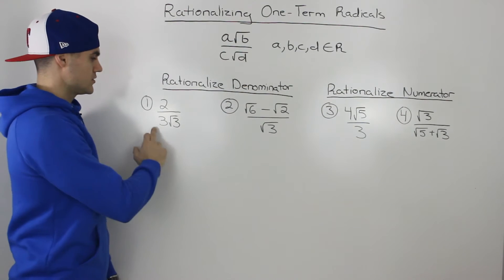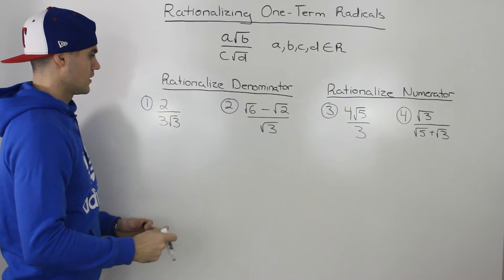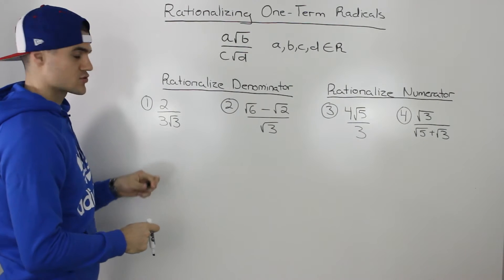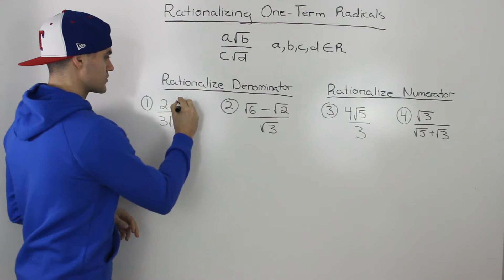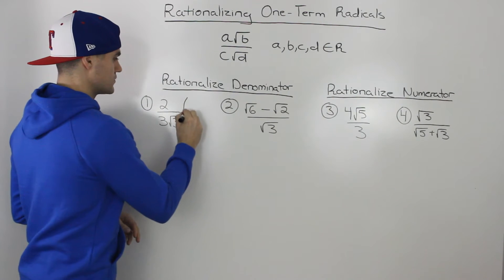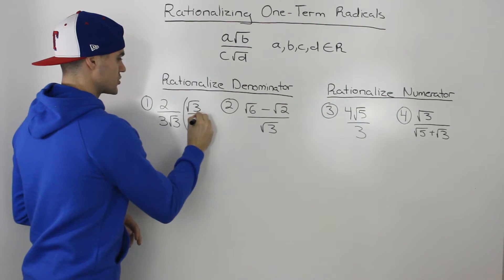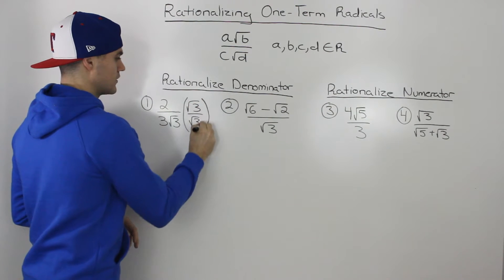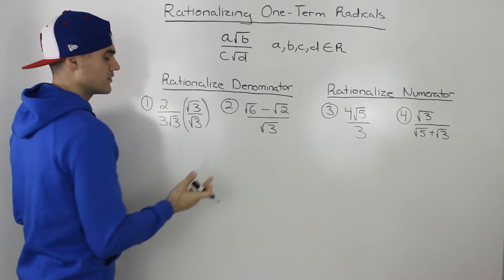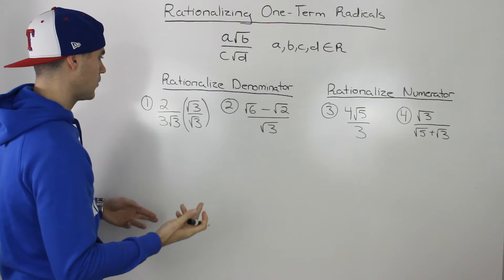So for this first one, 2 over 3 root 3, we want to get rid of this root 3 in the denominator. What we would do is multiply it by an expression where that root 3 is both in the numerator and the denominator — so it's like we're multiplying it by 1.